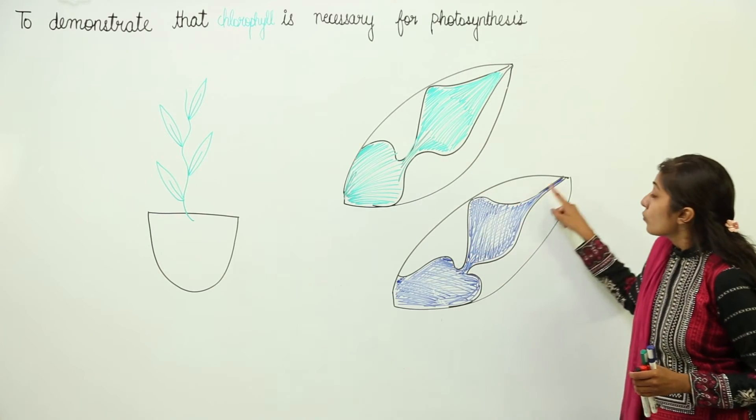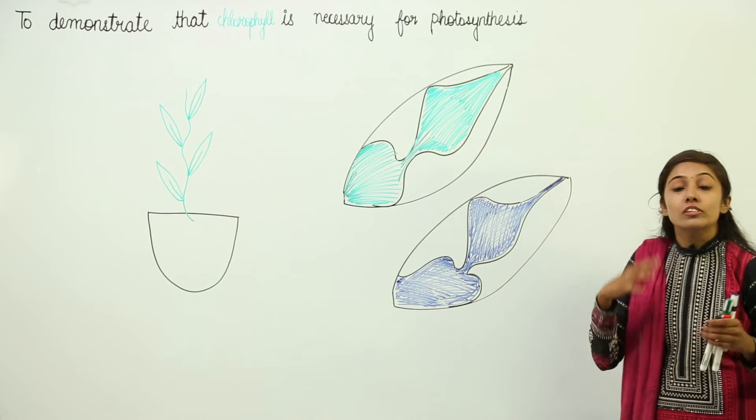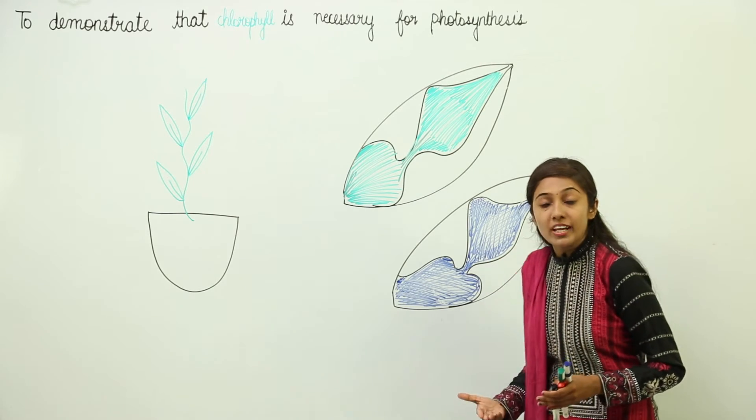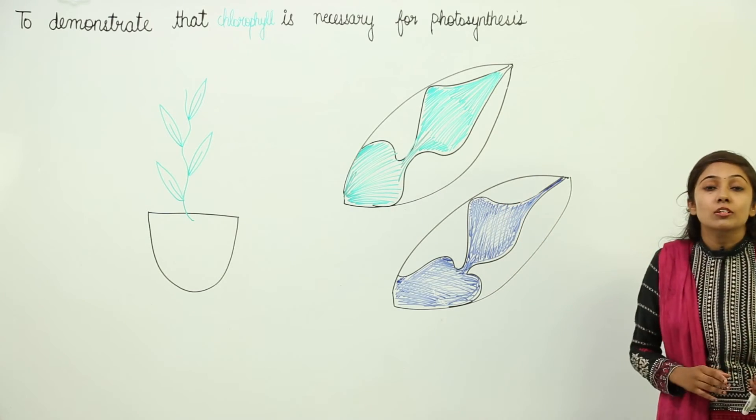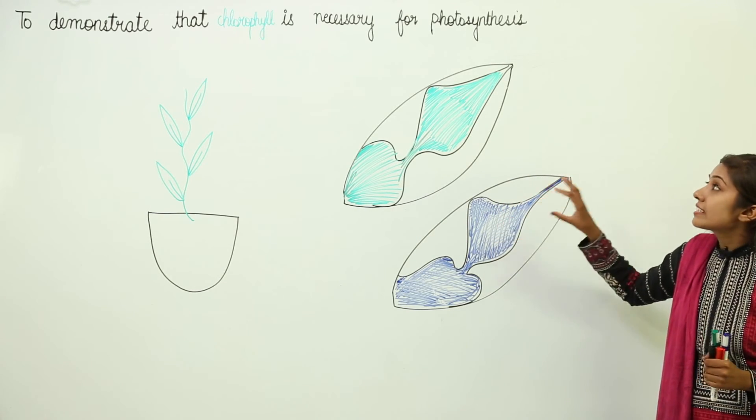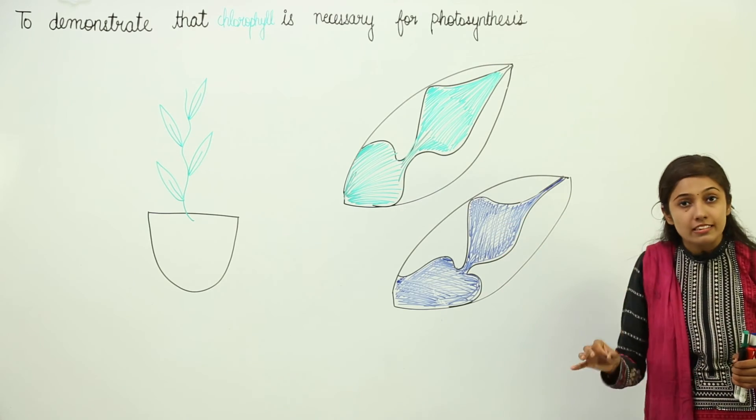The regions which were yellow in color didn't contain any chlorophyll pigment, and therefore gave a negative test for the presence of starch. This means chlorophyll is necessary for photosynthesis.